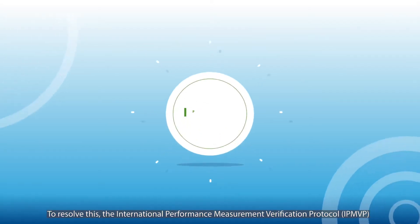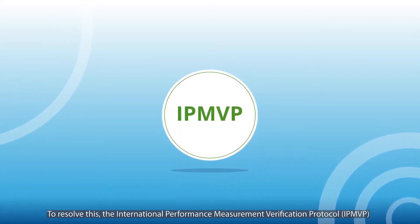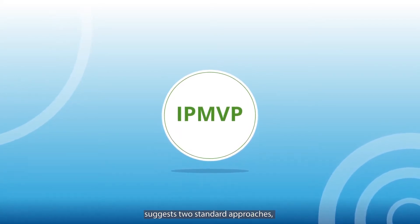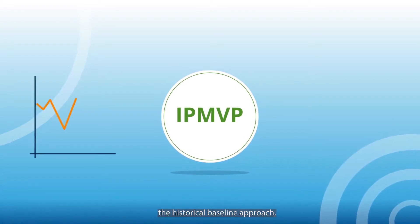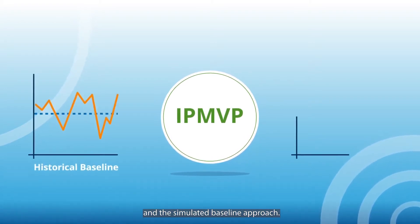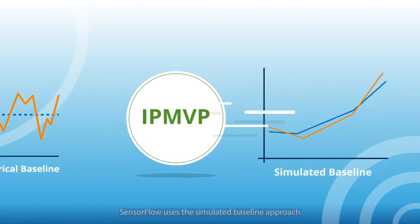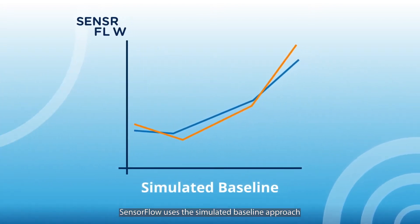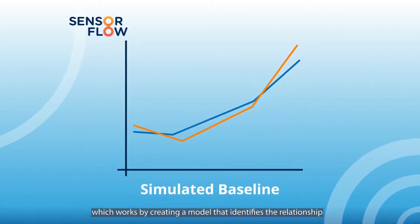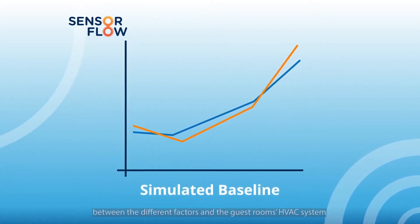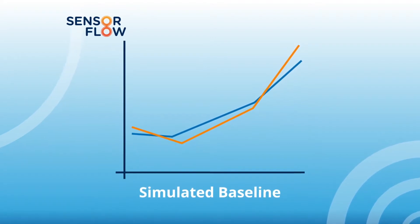To resolve this, the International Performance Measurement Verification Protocol, IPMVP, suggests two standard approaches: the historical baseline approach and the simulated baseline approach. SensorFlow uses the simulated baseline approach, which works by creating a model that identifies the relationship between the different factors and the guest room's HVAC system energy consumption.